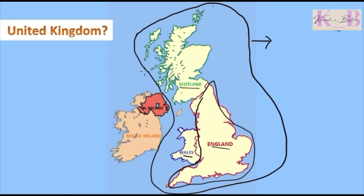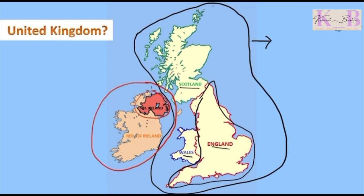Now, what is United Kingdom? As you can see on the left, this whole portion is called Ireland. Ireland consists of two countries — the upper portion is called Northern Ireland, and the lower portion is called the Republic of Ireland.